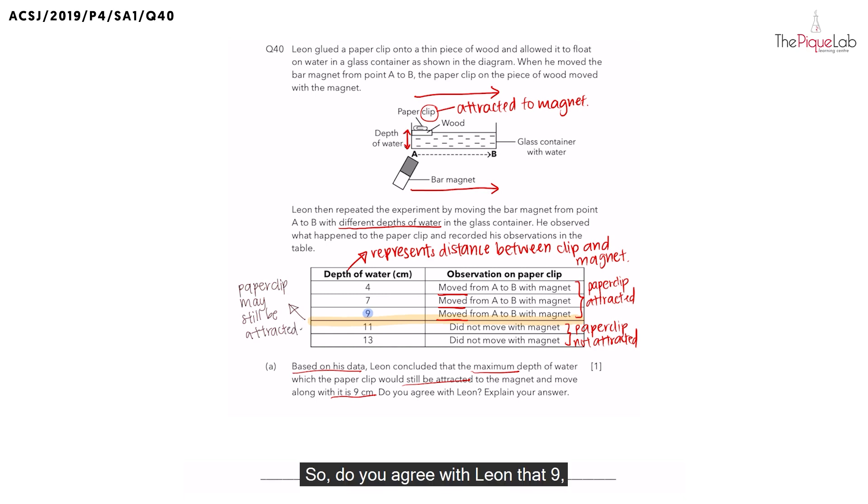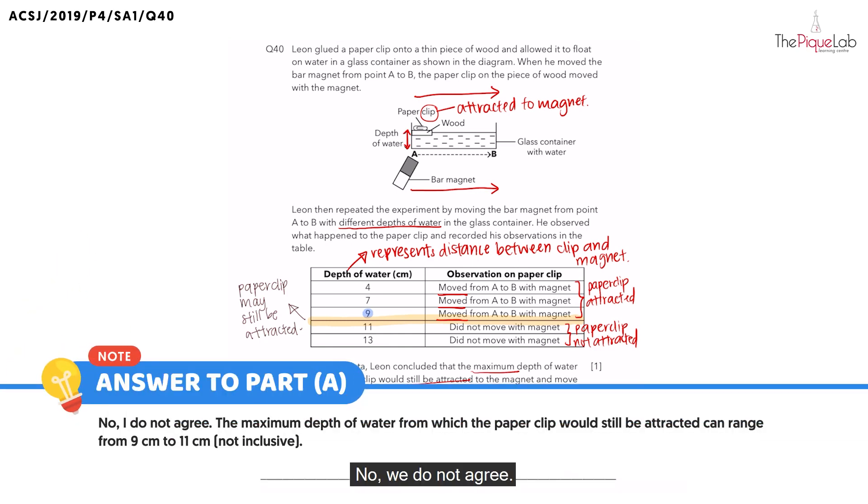So do you agree with Leon that 9 is the maximum depth that the paperclip would be attracted? No, we do not agree. Why? Because the maximum depth of water from which the paperclip would still be attracted can range from 9 to 11 cm, not inclusive. And that's your answer for part A.